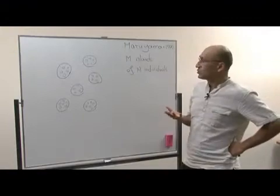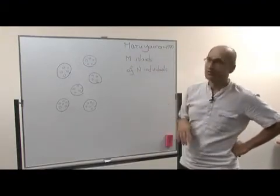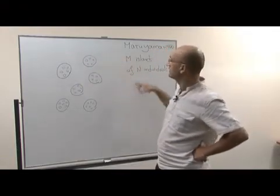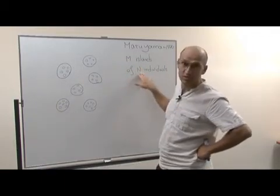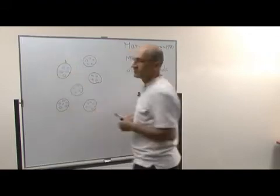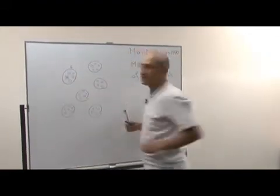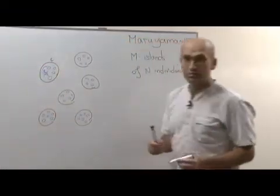The most rigorous way of tackling this problem has been introduced by Maruyama in the 70s and is called the island model. Space is divided into m islands, and each island contains n individuals. When in a given island, say island i, one individual dies, it can get replaced by a local individual or by the migration of a progeny from another island, say j.